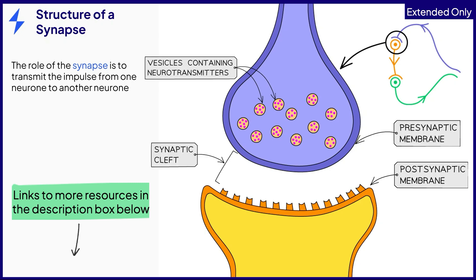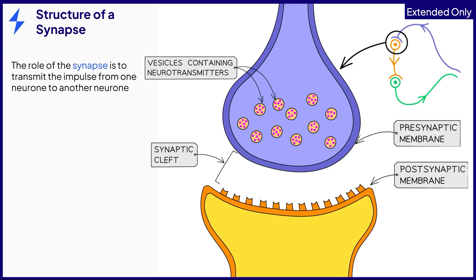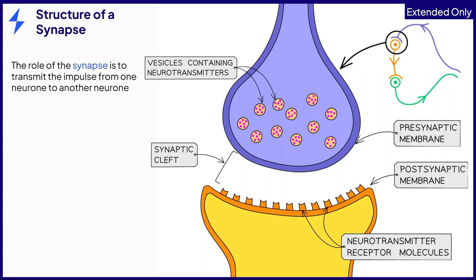The synaptic cleft is the gap between the two neurons. The yellow neuron is the relay neuron and the end is covered in receptor proteins that can bind to neurotransmitters, in a similar way to how enzymes and substrates bind in the Lock and Key model.